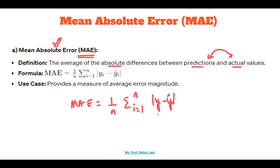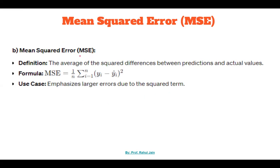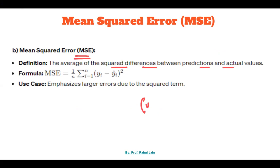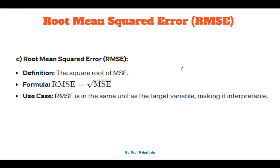The second term is Mean Squared Error. MSE is the average of squared differences between prediction and actual value. We calculate the square of the difference between prediction and actual value, and the average of those squared differences is called Mean Squared Error. Additionally, the square root of MSE is called Root Mean Squared Error, or RMSE.